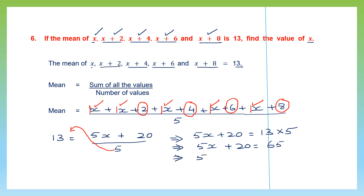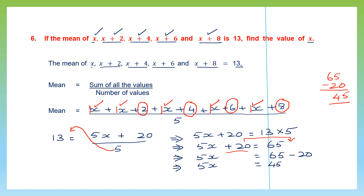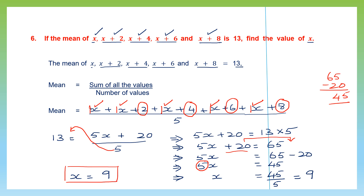To find the value of 5x, we say 65 minus 20 — since plus 20 becomes minus when transposed. 65 minus 20 equals 45, so 5x equals 45. To find x, we divide 45 by 5 because 5x means 5 times x. 5 nines are 45, so x equals 9. We were asked to find the value of x and we have found it to be 9.